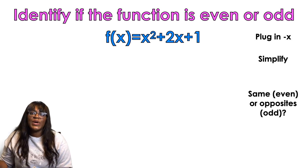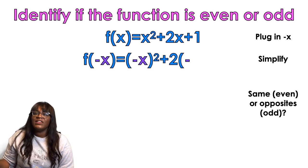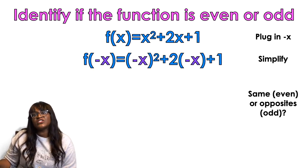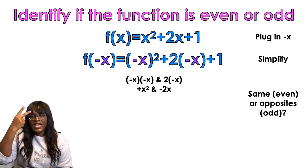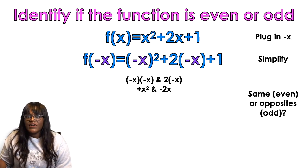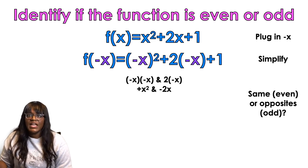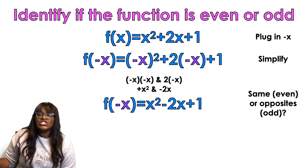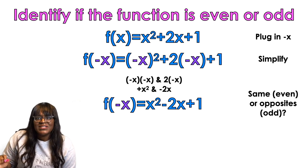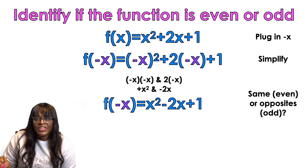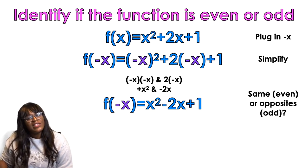f of x equals x squared plus 2x plus 1. I'm going to plug in negative x. So negative x squared and then 2 times negative x. Negative x times negative x. Two negatives make a positive. And then 2 times negative x is going to give me negative 2x. So what do we have here? Well, the original problem had a positive x squared. The positive x squared stayed. The original problem had a positive 2x. But in this one, the 2x is negative.